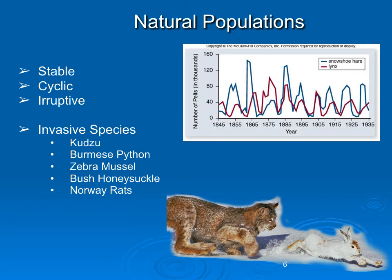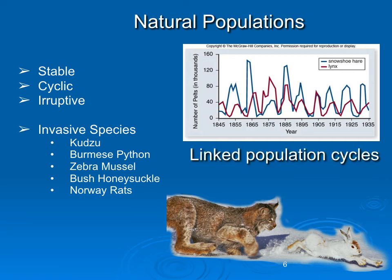In our area, we have problems with invasive fish and mussels that spread — one is the zebra mussel — and also a bush honeysuckle, a woody bush that spreads. These are potential problems all the time, and they're usually opportunistic species that have the potential to undergo exponential growth.